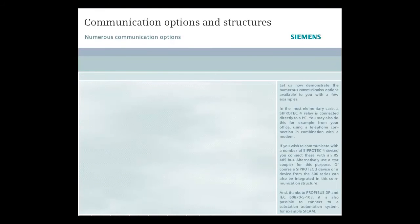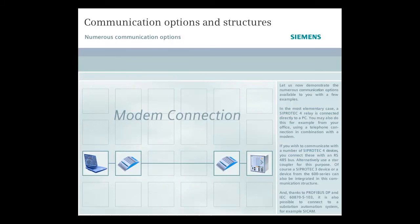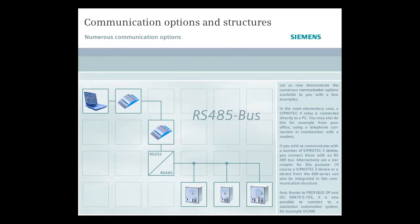Let us now demonstrate the numerous communication options available to you with a few examples. In the most elementary case, a C-Protect 4 device is connected directly to a PC. You may also do this, for example, from your office using a telephone connection in combination with a modem. If you wish to communicate with a number of C-Protect 4 devices, you connect these with an RS-485 bus.